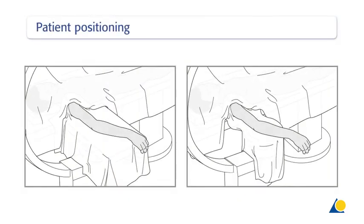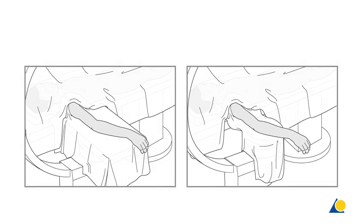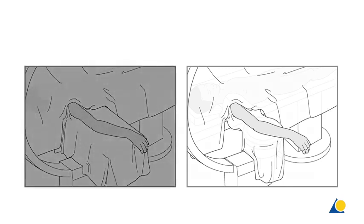The patient is positioned supine on the operating table, with the arm either on an arm-side table or directly on the draped C-arm. Positioning the arm directly under the C-arm guarantees larger and better image intensification quality of the fracture site and reduces exposure time to radiation. However, care should be taken to avoid damaging the image intensifier with instruments.